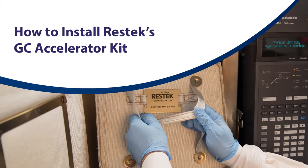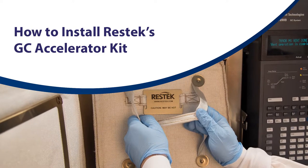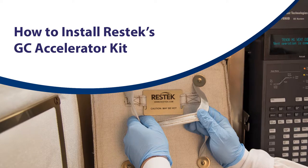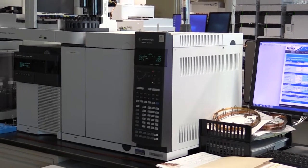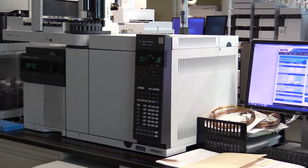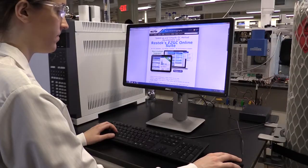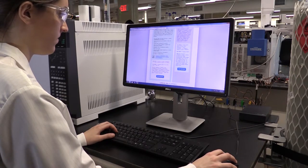The Restek GC Accelerator Kit reduces oven volume in Agilent 6890 and 7890 GCs equipped with mass spectrometers. This allows for faster oven ramp rates and quicker cool down times, which means faster chromatographic methods can be developed.